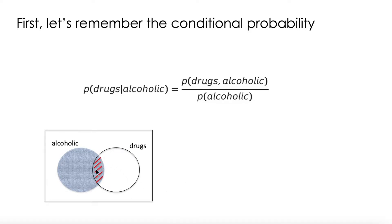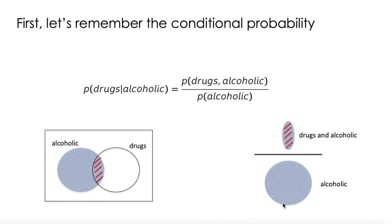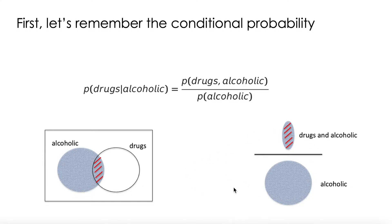That's why we need to divide this piece by this other piece. That's why the formulation of conditional probabilities is the one we have here. Recall that this line means 'given' and the comma is also used for 'and.' So here we're saying that the probability of doing drugs given that we are alcoholic is going to be the probability of doing drugs and being an alcoholic divided by the probability of being an alcoholic, as shown in this diagram.